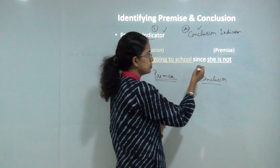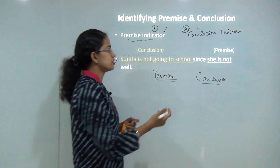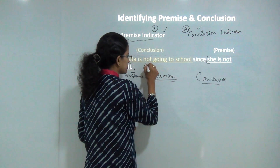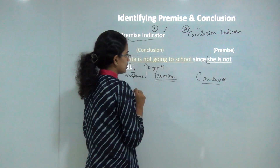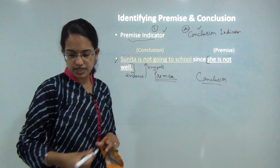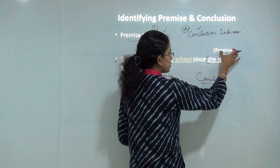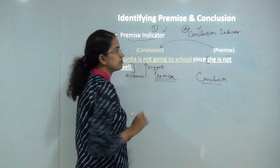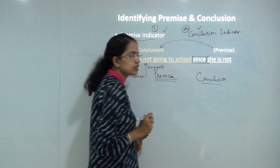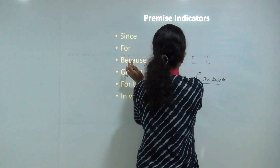When I say 'since she is not well,' 'she is not well' is the evidence, and this evidence supports the conclusion. The conclusion here becomes 'Sunita is not going to school.' So here you have identified the premise, and since you have identified the premise or the evidence, you can find out the conclusion. The premise indicator here is the word 'since.'